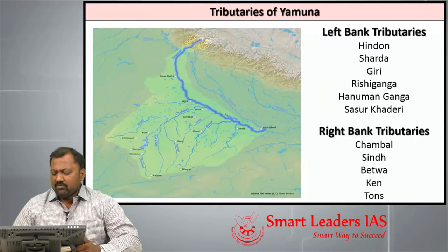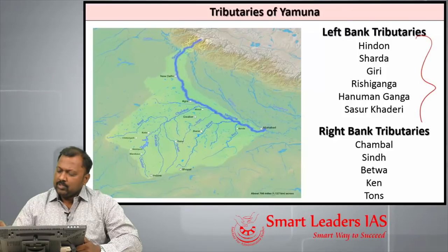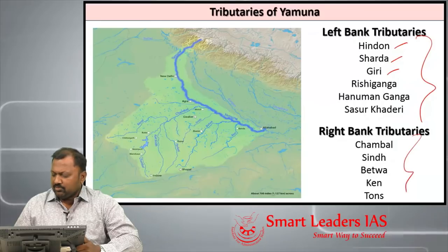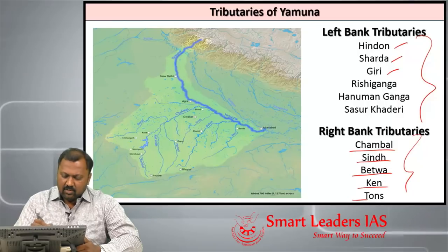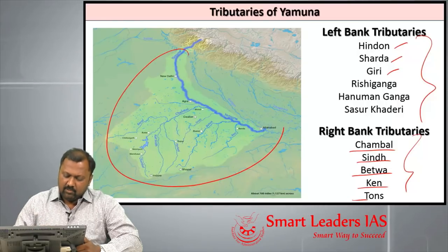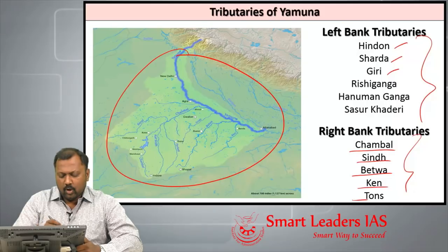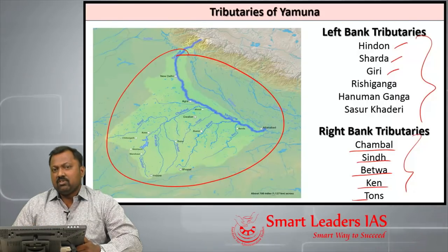Let us see some tributaries of river Yamuna. The left bank tributaries include Hinden, Sharda, Ghiri, etc. The right bank tributaries include Chambal, Sindh, Betwa, Ken, Tons, etc. An image has been provided — please pause the video and go through all these important tributaries of river Yamuna.